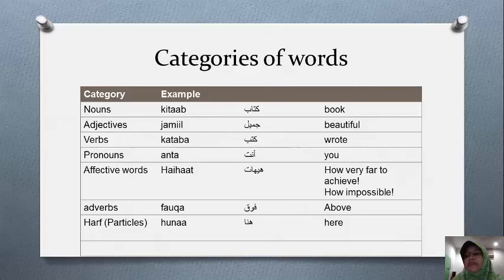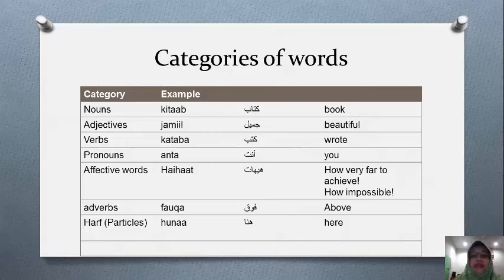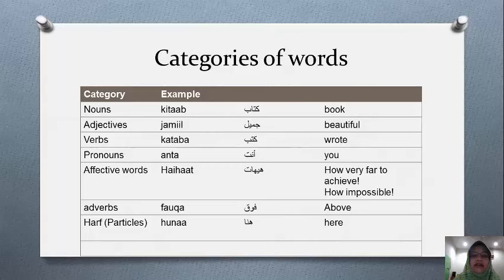A noun can also be a name of a person, for example 'Zainab'. It can also be a noun based on a pattern template, for example 'masna'. These are all nouns. It could also be something like a demonstrative noun, like 'hatha' (this).